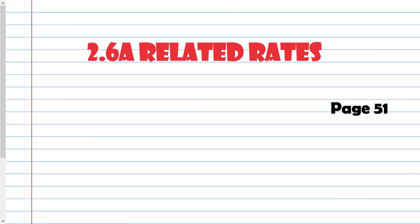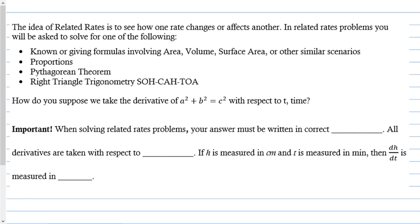2.6a, Related Rates. We're going to start talking about related rates, and related rates are basically implicit differentiation, but they're mostly word problems in this class that you're going to have to figure out what the equation is that you're going to derive, and then all the information that they give you, plug it in and figure out what it is that you're looking for. These equations are going to be things that you already kind of know.